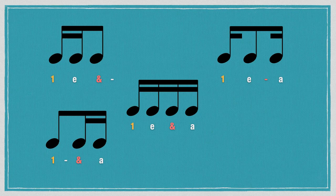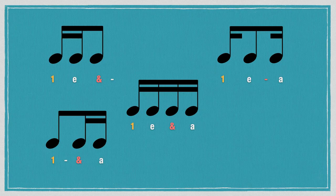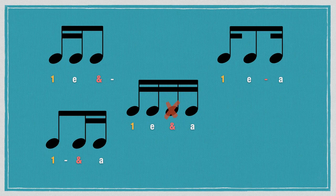So if we've got an eighth note on the E of the beat or the second partial, then that's going to take up the space of the third partial or the and. So we don't have our and in here or our third partial and we count this rhythm as one E a.